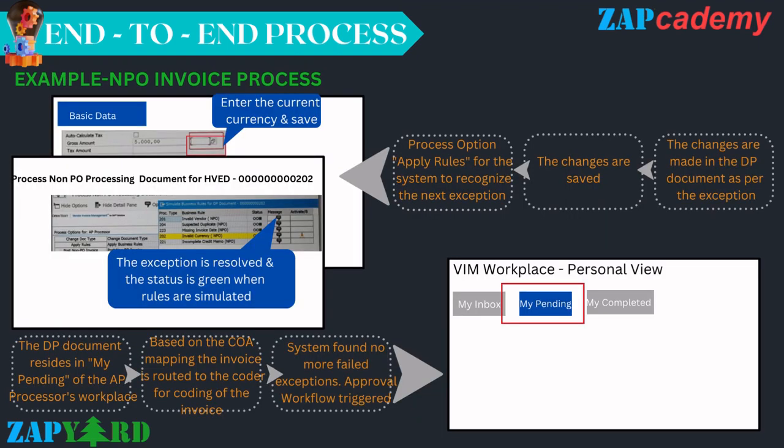In this case, an 'Invalid Currency' exception has been triggered. By entering the correct currency and saving, then clicking 'Apply Rules' or 'Simulate Rules,' the exception gets resolved and the status turns green. All changes relevant to the particular DP doc ID are made inside the DP document per the raised exception. The changes are saved and the 'Apply Rules' option is triggered, so the system can recognize the next exception or, if all exceptions are resolved, proceed to the next business rules.